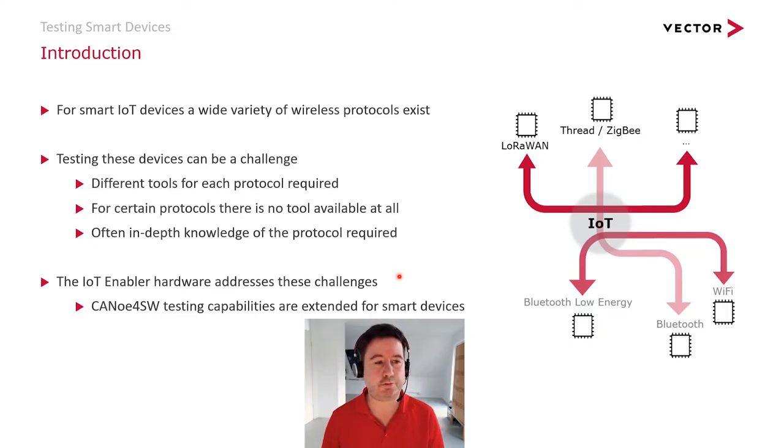Hello and welcome to the Vector virtual session on testing smart devices locally. My name is Simon and I've been working in the Canoo development at Vector for eight years. Markus and Urs already showed how a pure software system and the cloud system can be tested with Canoo for software. In this talk I will introduce the IoT Enabler. This hardware can be used in combination with Canoo for software to access and test a physical system under test using Wi-Fi or Bluetooth Low Energy.